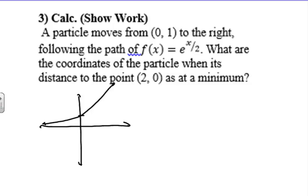What are the coordinates of the particle when its distance to the point is at a minimum? So we're going to start at (2, 0). We're going to try to figure out a point on here. Now this point can change all along this axis. We're trying to figure out where it will have a minimum distance from the point (2, 0) that we have here.